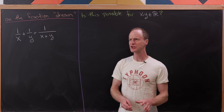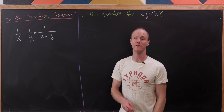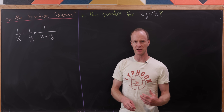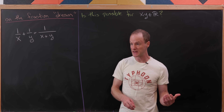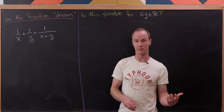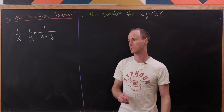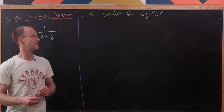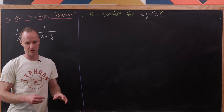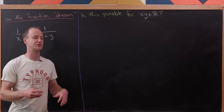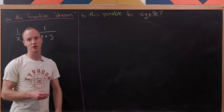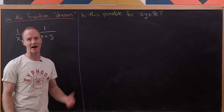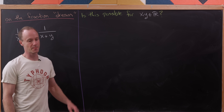We should really think about what type of numbers we're considering here. Could x be a rational number, an integer, a real number, a complex number, and so on? Let's first answer this question for real numbers x and y, which in turn will answer the question for subsets of the real numbers as well, such as rational numbers or integers.